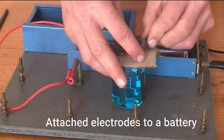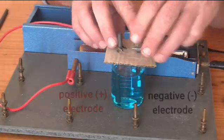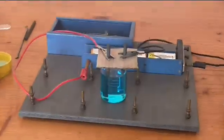The electrodes are attached to the battery. We have the positive electrode on the left and the negative electrode on the right.